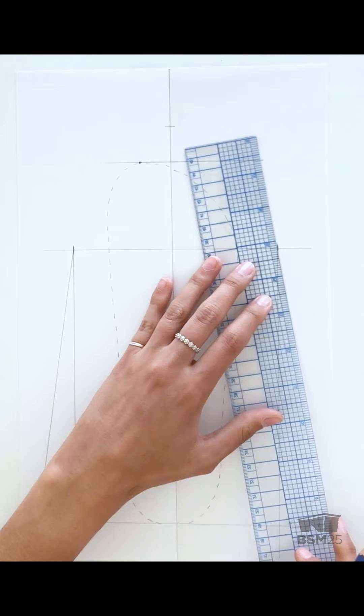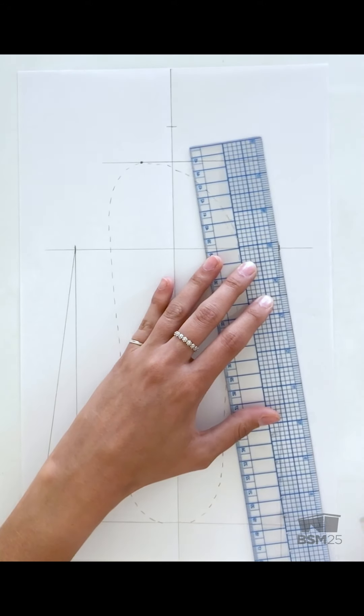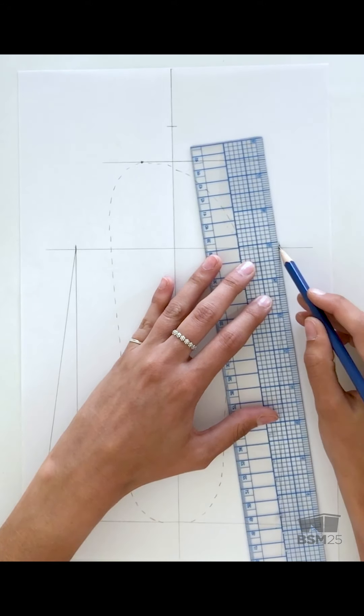We're then going to draw a diagonal line from this tick mark through this tick mark all the way to the bottom of the page.